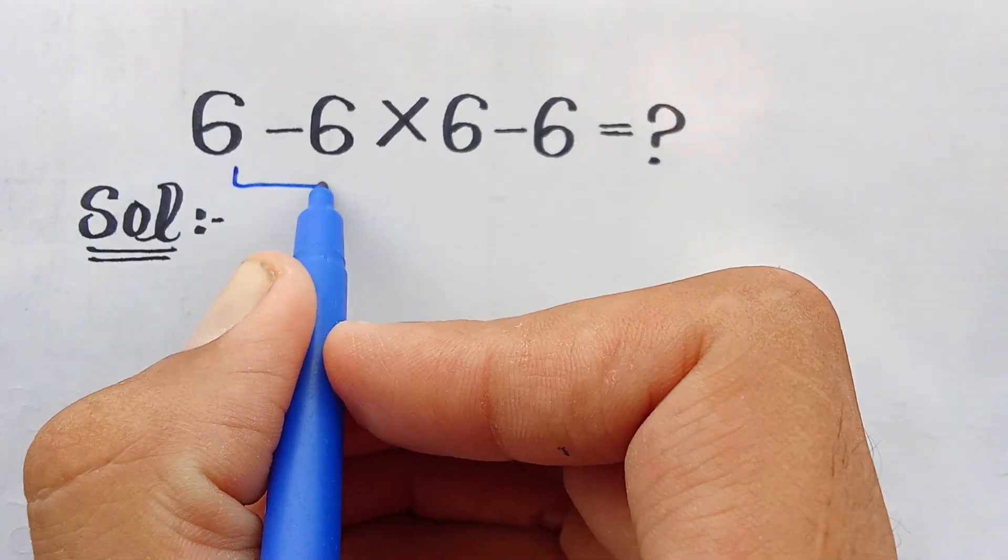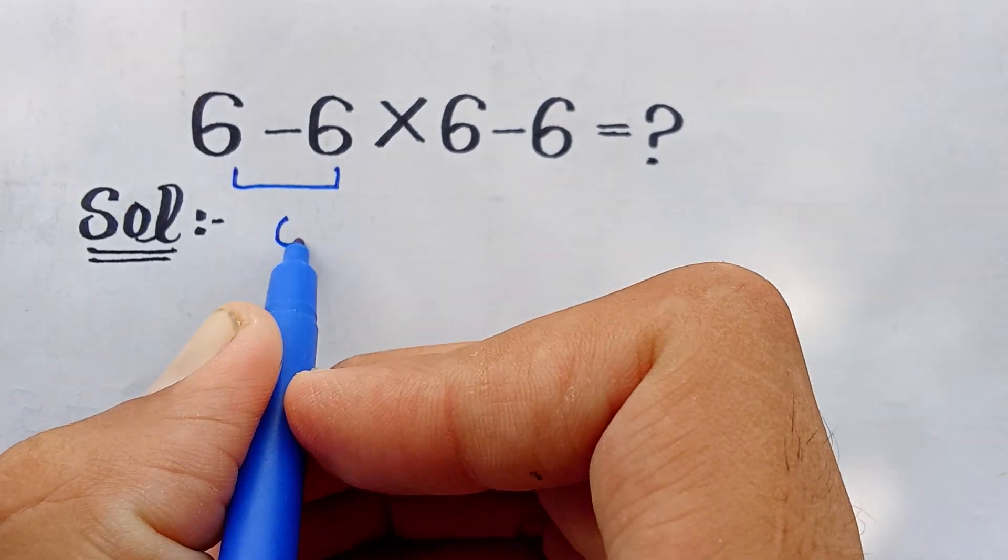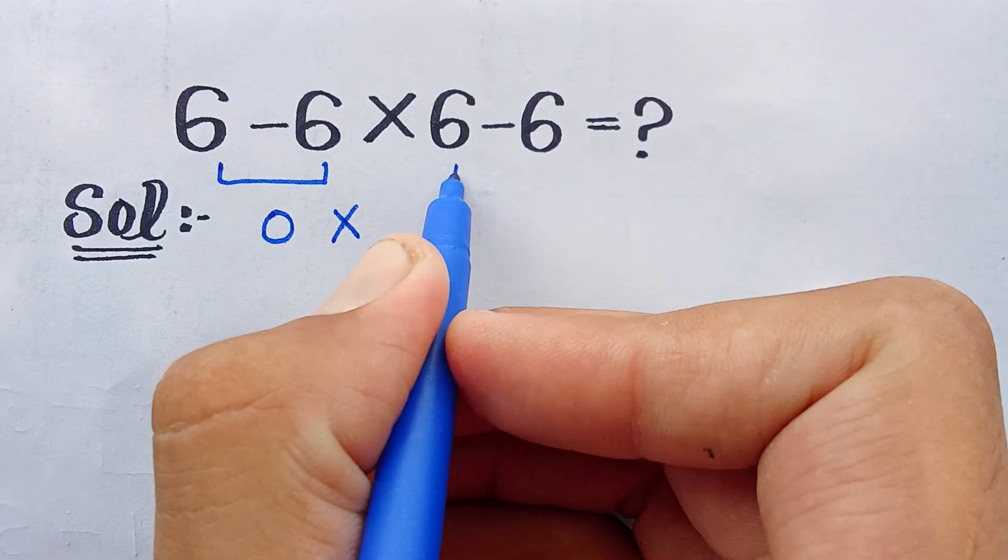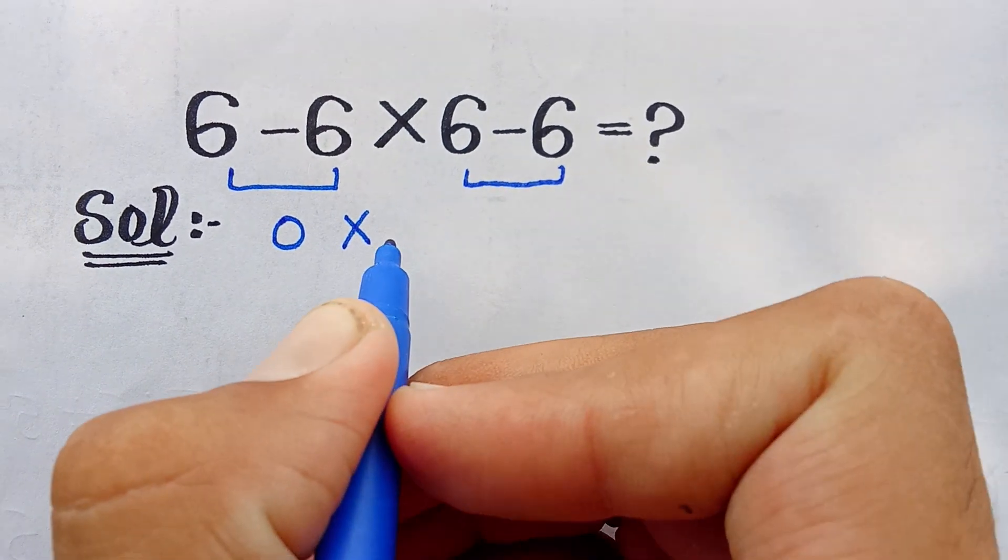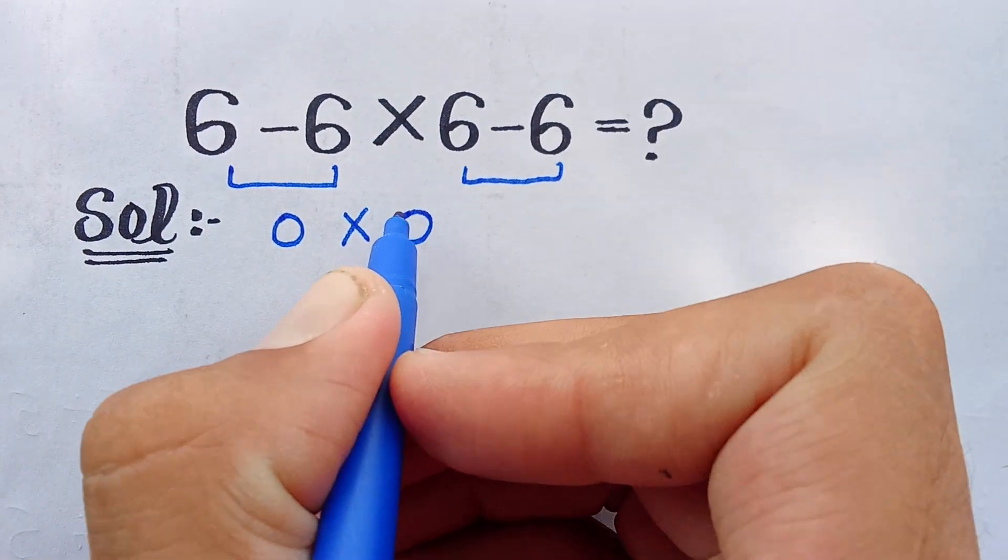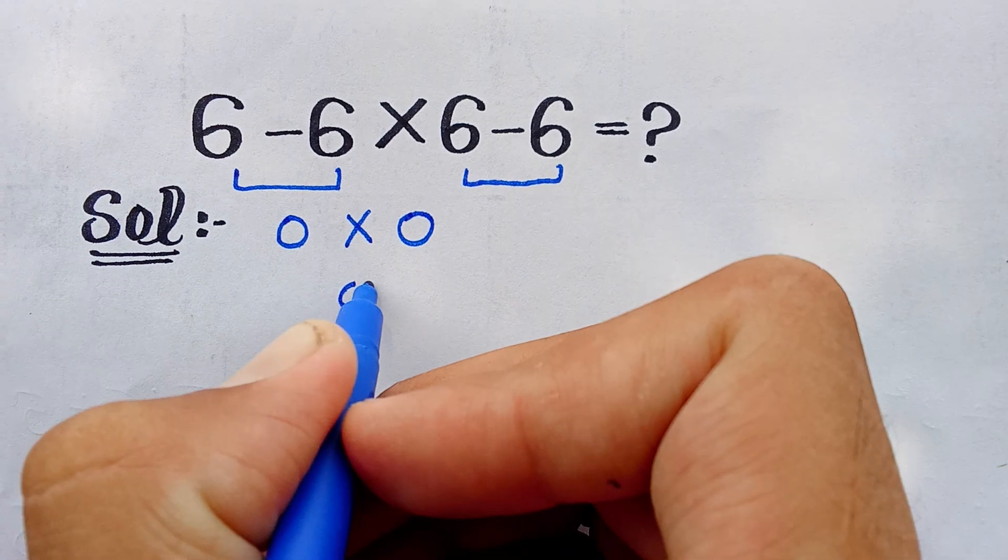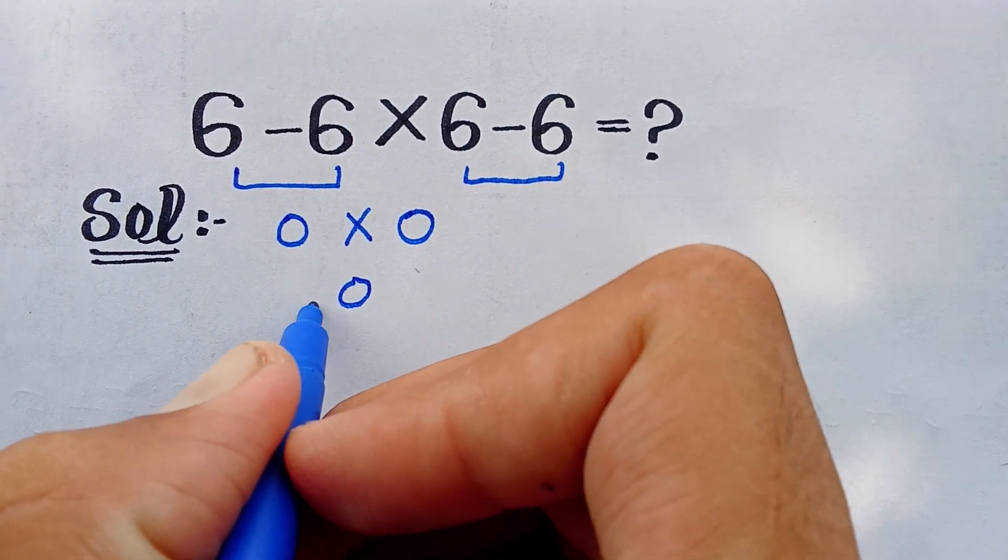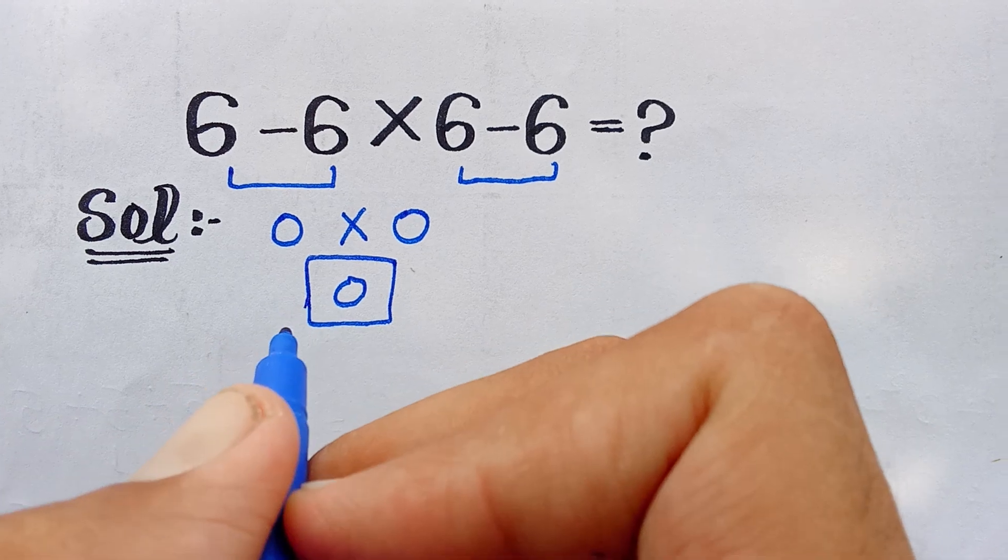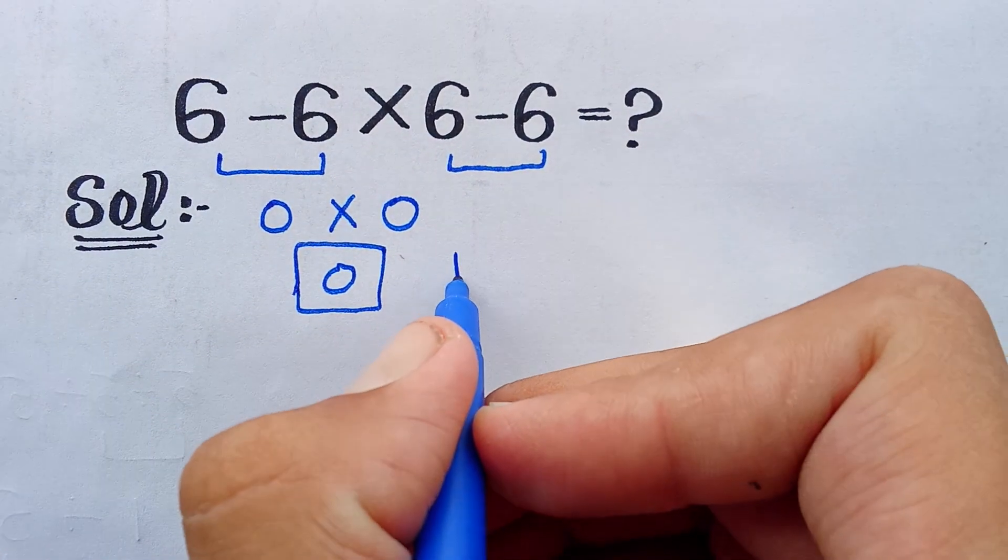6 minus 6 is equal to 0, multiplied by 6 minus 6 again equals 0. So 0 times 0 is equal to 0. But this answer is wrong because of the order of operations, which is PEMDAS: P